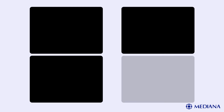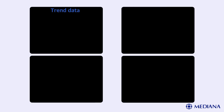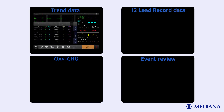Data recording is divided into four types: trend data, 12 lead recording data, OxyCRG and event review. For trend data, the monitor presents trend information in tabular format for all monitored parameters. The newest data appears at the bottom of tabular trends. For the NIBP trends, the data may display the latest measurement.